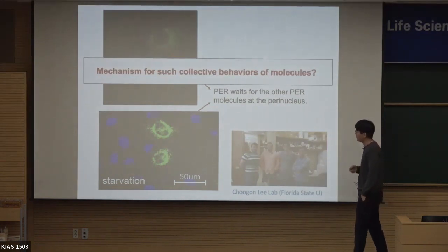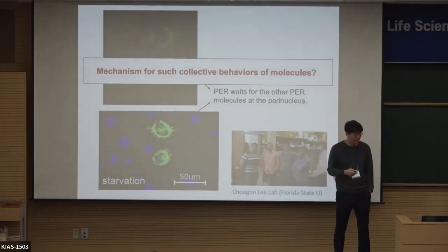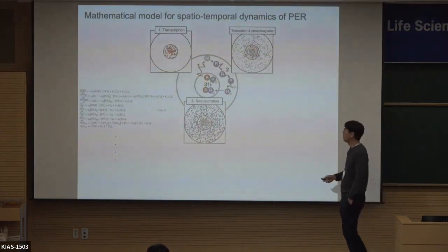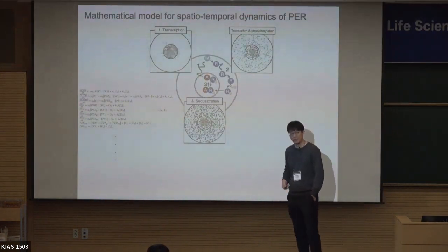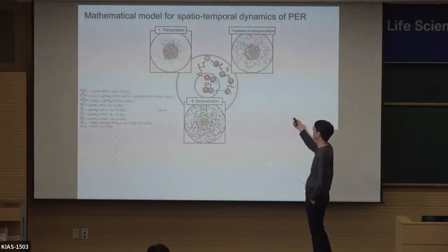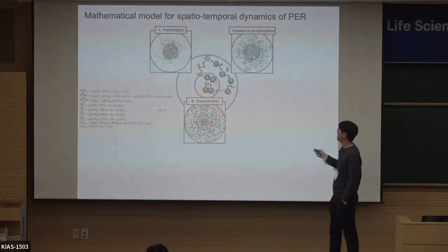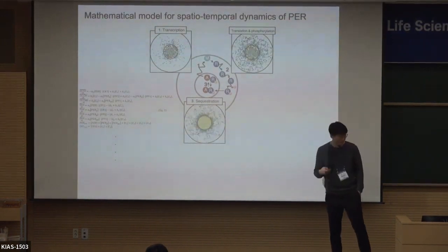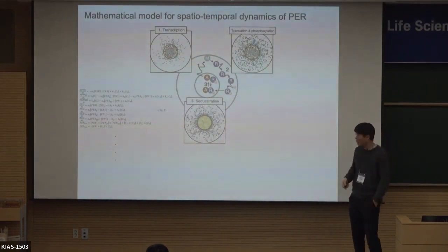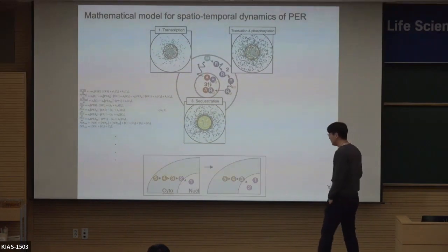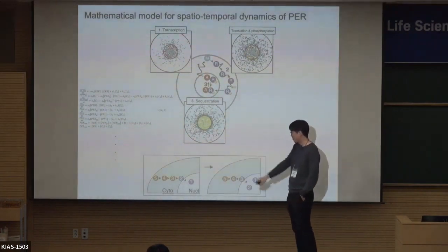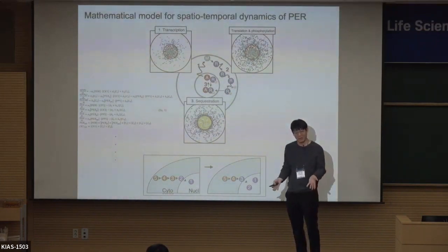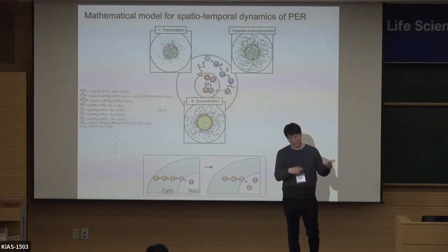To investigate this, we used a mathematical modeling approach — specifically an agent-based model. Transcription occurs inside the nucleus, proteins are translated in the cytoplasm, they travel and enter the nucleus, and sequester the inhibitor of transcription — that's the negative feedback loop. But with current knowledge, we found that when certain proteins arrive earlier at the nucleus, they just enter earlier. There was no collective behavior. That means something is missing in that negative feedback loop.